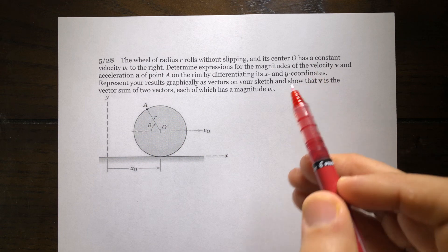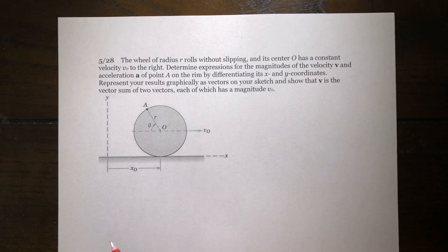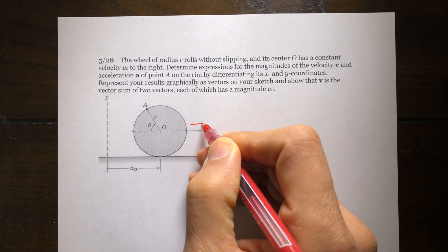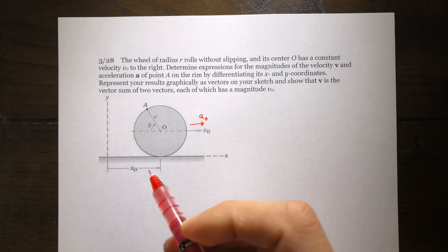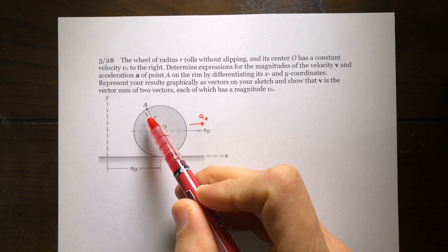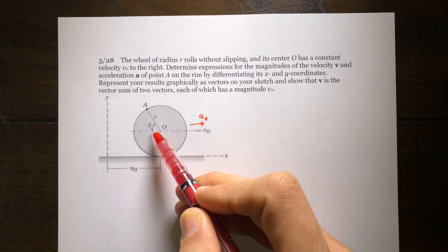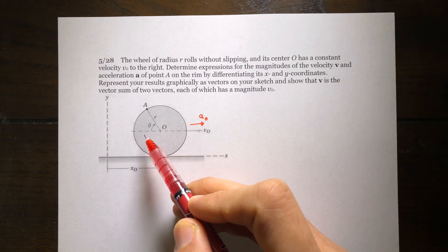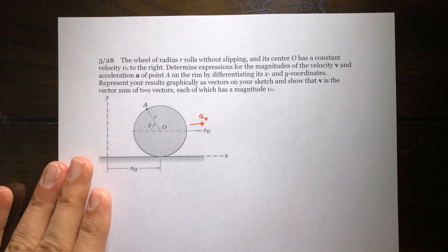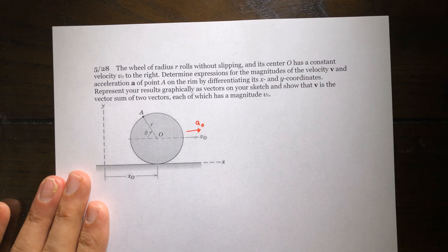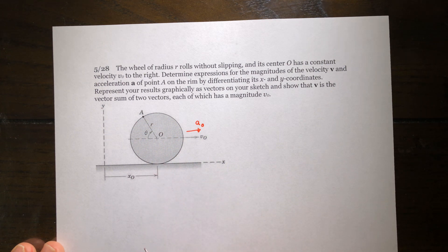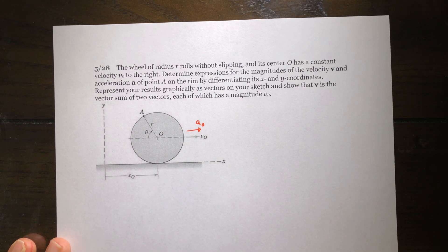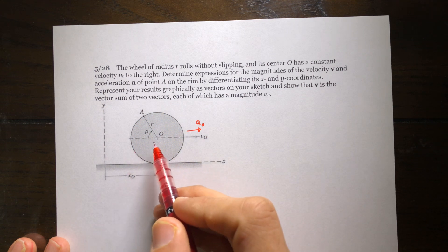In this problem, we assume the velocity of the center is v₀, and more generally, the acceleration of the center is a₀. With these assumptions, the question is: what is the velocity and acceleration of point A? Point A is defined by angle theta — the angle of its radius with the horizontal direction. To find the velocity and acceleration, I can find the coordinates of point A in terms of theta and the location of the center, then take derivatives.